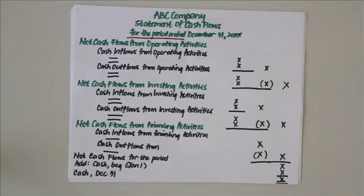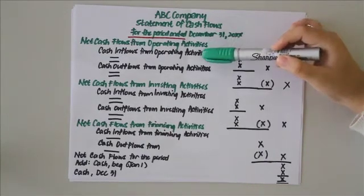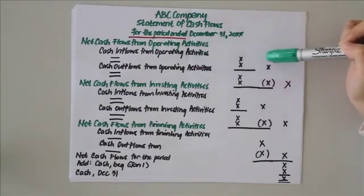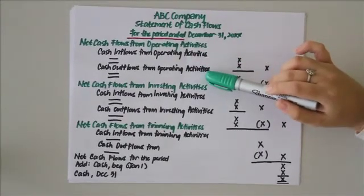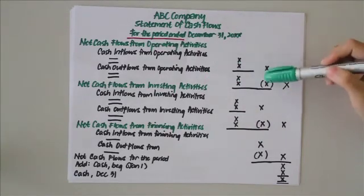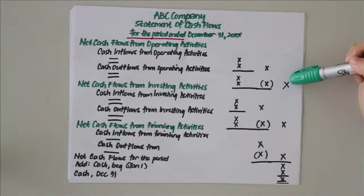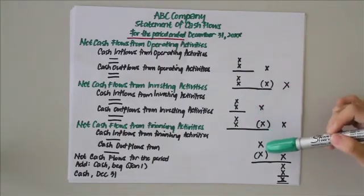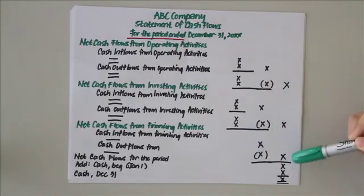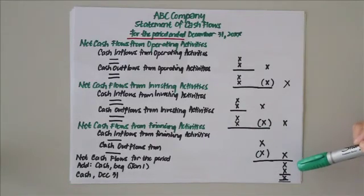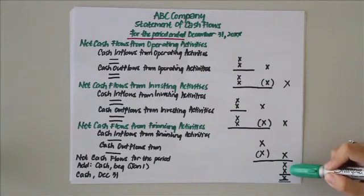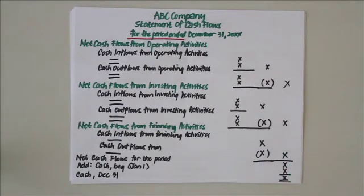After the heading, list the net cash flows from operating activities: first list all the inflows and get the total, then list all the outflows and get the total, and find the difference to get the net cash flows from operating activities. Do the same for investing and financing activities. Then get the total net cash flows from all three activities for the period. Add the beginning cash balance — usually January 1 — to get the ending cash balance, usually December 31. And there you have your statement of cash flows.